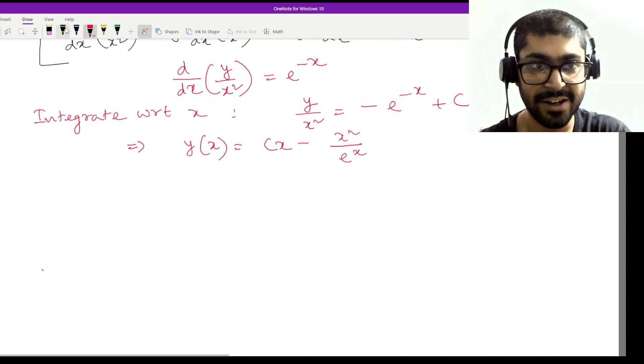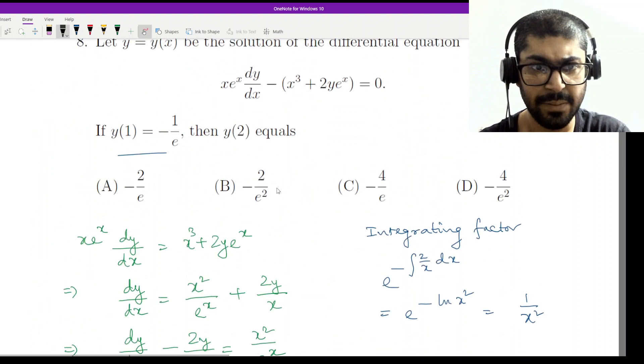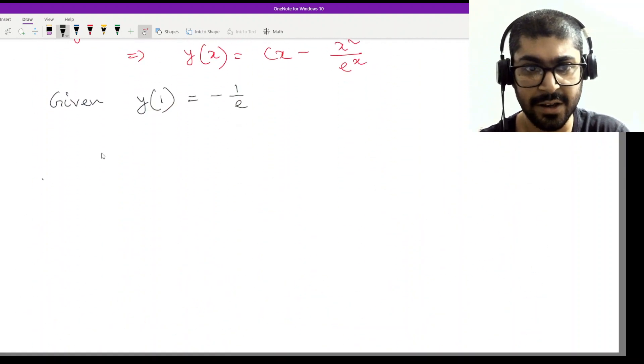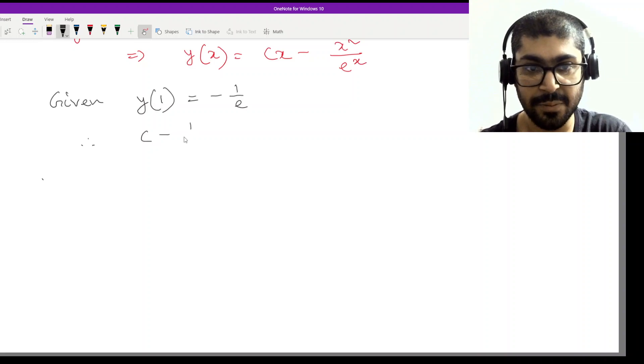Now we place the conditions that are given. Given y(1) equal to -1/e. That means c - x² will become 1 square, which is just 1 minus 1/e^1 equal to -1/e, which implies c equals 0.